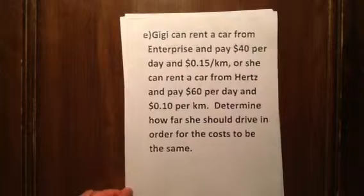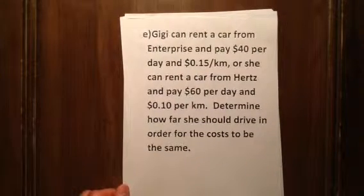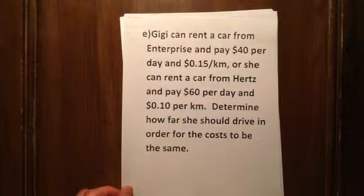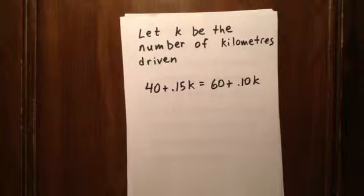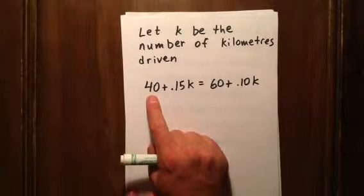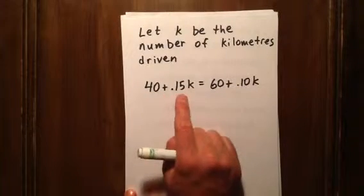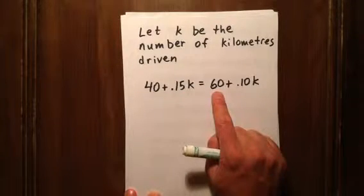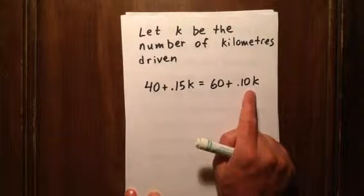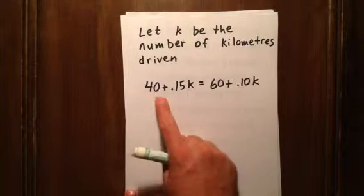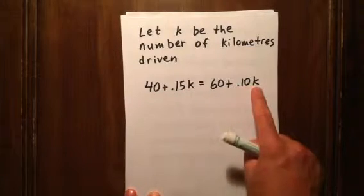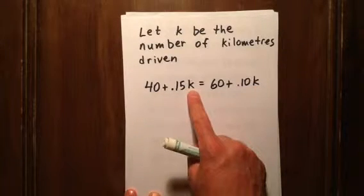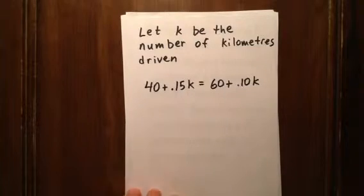Gigi can rent a car from Enterprise for $40 per day plus $0.15 per kilometer, or from Hertz for $60 per day and $0.10 per kilometer. We want to know how far she should drive for the costs to be equal. We let K be the number of kilometers driven. The Enterprise cost is 40 plus 0.15K, and the Hertz cost is 60 plus 0.10K. We set them equal to find when the rates are the same — one equation with one variable, K.